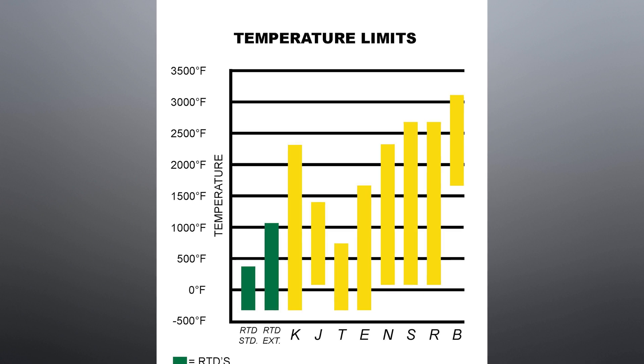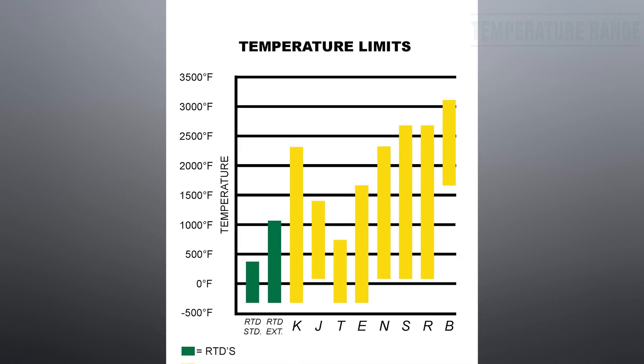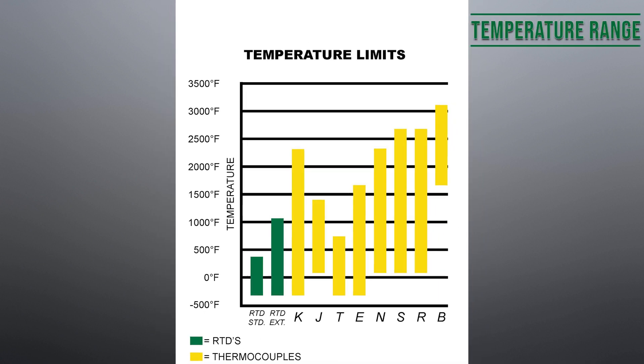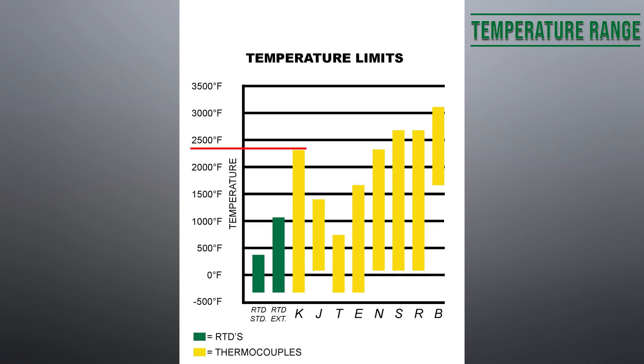One of the most important differences between an RTD and a thermocouple is the temperature range. Base metal thermocouples can reach 2300 degrees Fahrenheit and noble metal thermocouples can reach 3100 degrees Fahrenheit. Compare that to an RTD that has a standard maximum range of 400 degrees Fahrenheit and an extended range of 1100 degrees Fahrenheit.